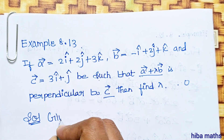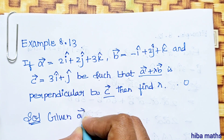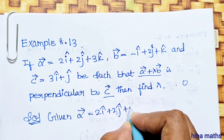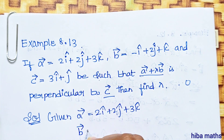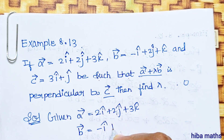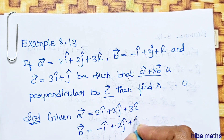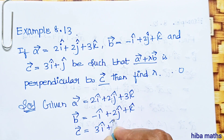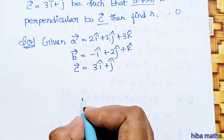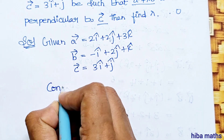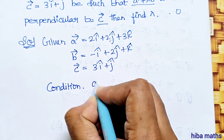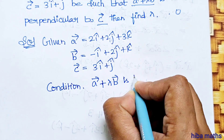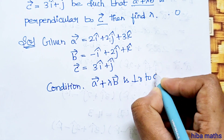Solution. Given: vector a is equal to 2i plus 2j plus 3k, vector b is equal to minus i plus 2j plus k, and vector c is equal to 3i plus j. The condition is that vector a plus lambda times vector b is perpendicular to vector c.